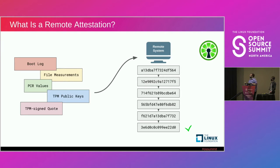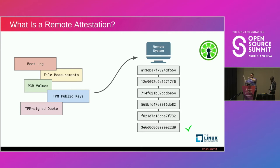Combining the boot log, file measurements, PCR values, and TPM public keys from the manufacturer and chip, we can get a signed quote from the TPM — essentially the TPM signs a bundle of data with its private key. We can then validate that this signed blob came specifically from this TPM, from this manufacturer, establishing a hardware root of trust. Once PCR values are extended they can't be changed, so we ship all this to a remote system that walks through the chain of hashes, and if we arrive at the same value as the signed PCR, we know nothing was compromised.